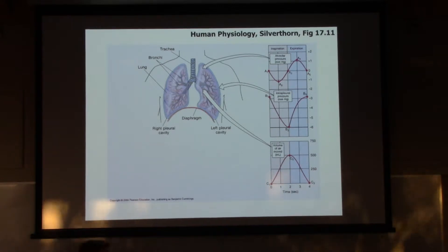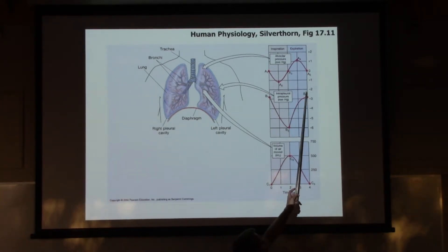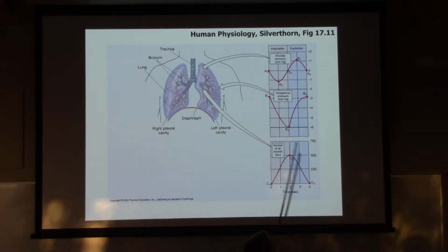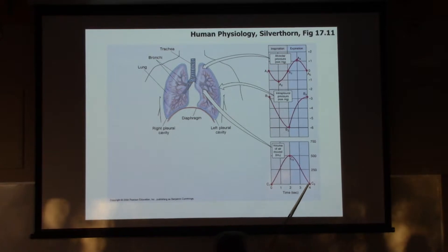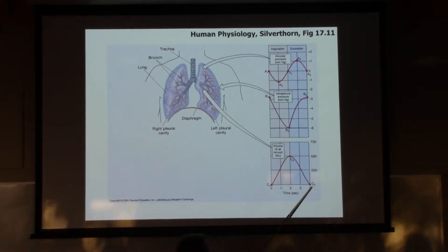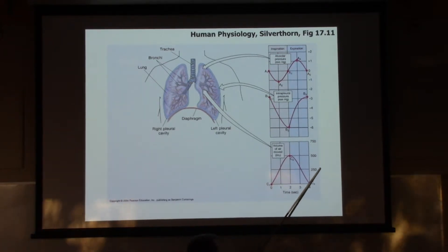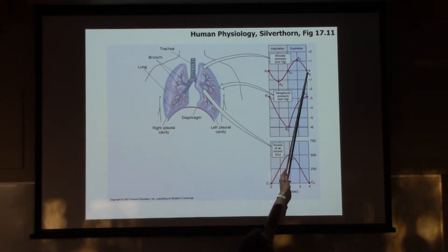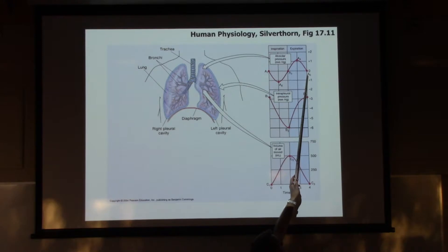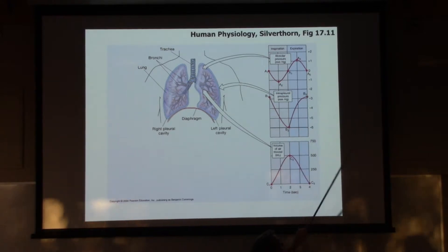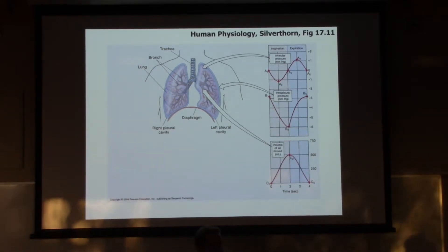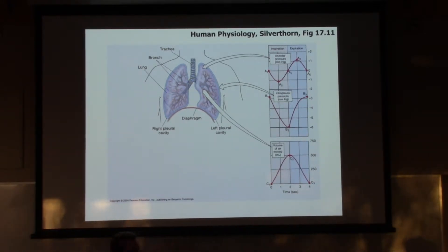At this point, we're at the far right side, which is the same as the far left side. We just finished exhaling. We haven't started inhaling yet. Pressure in the alveoli equals atmospheric pressure, and the interpleural pressure is at its maximum.